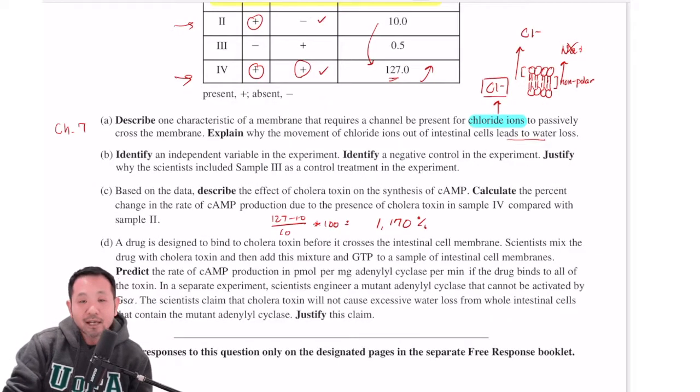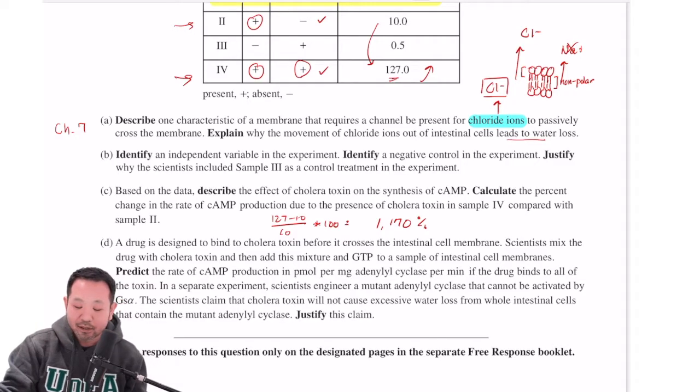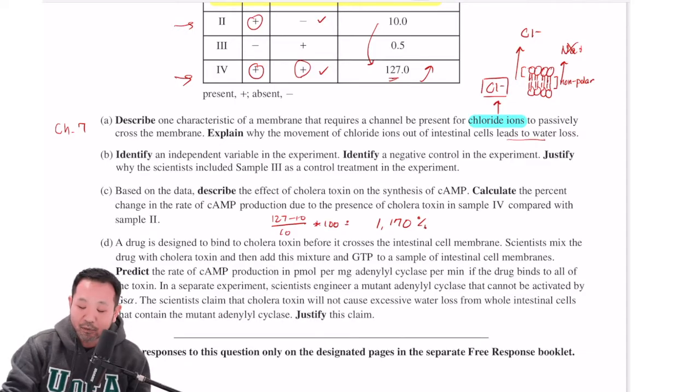that sounds about right as well. Now, let's tackle the last part of this question. It says a drug is designed to bind to cholera toxin before it crosses the intestinal cell membrane. Scientists mix the drug with cholera toxin and then add this mixture and GTP to a sample of intestinal cell membranes.